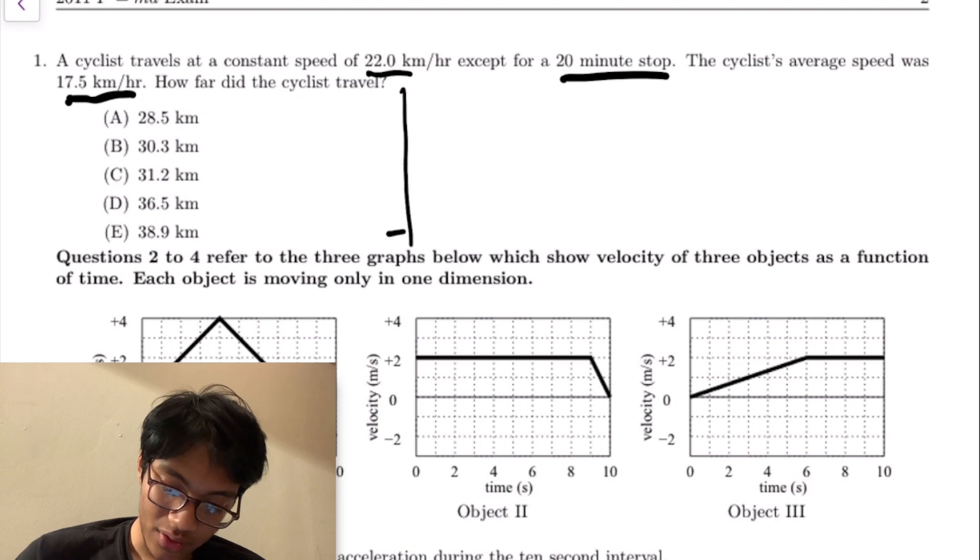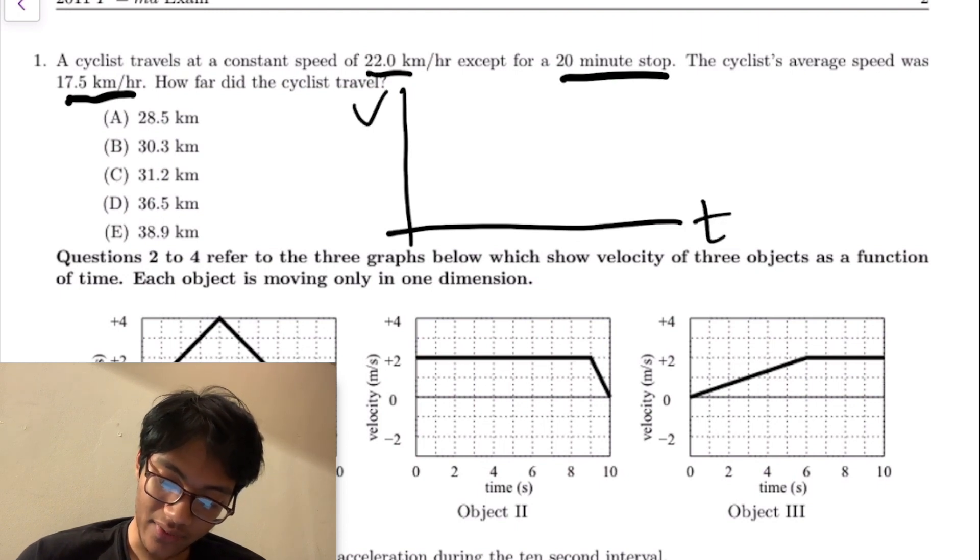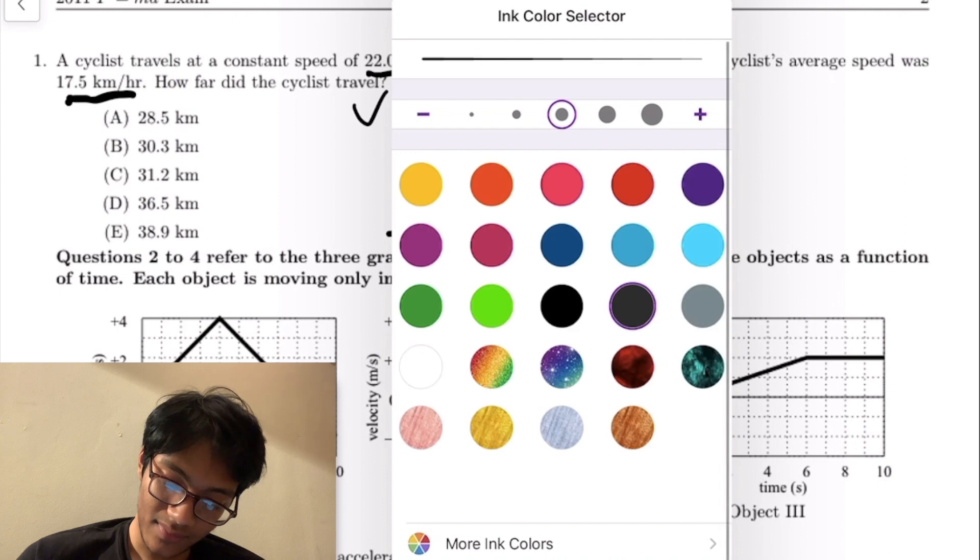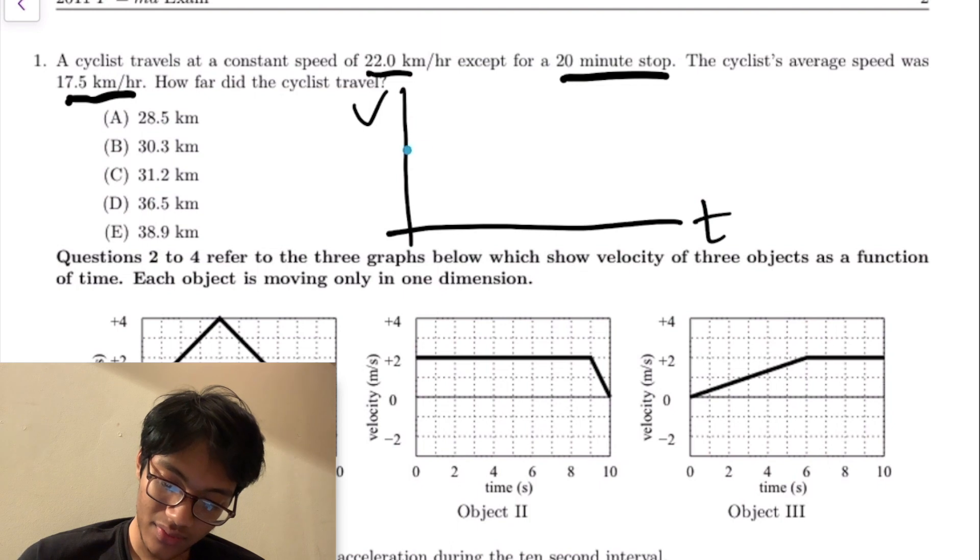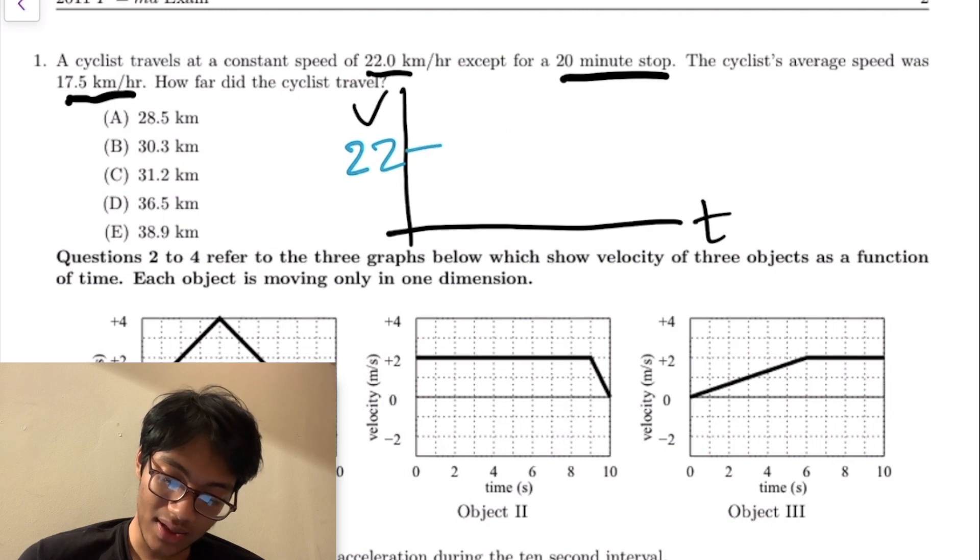I drew a graph. We know he travels at a constant speed, so if we draw his VT graph, it'll look something like this. Here would be his VT graph - 22 kilometers per hour. It would be just straight because he's traveling at a constant velocity. At some point in this journey he stops and comes back and finishes.